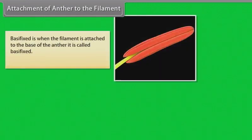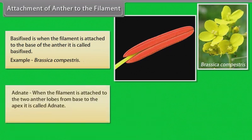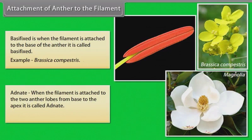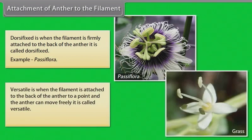Attachment of anther to filament: Basifixed — filament attached to the base of the anther, example Brassica campestris. Adnate — filament attached to the two anther lobes from base to apex, example Magnolia. Dorsifixed — filament firmly attached to the back of the anther, example Passiflora. Versatile — filament attached to the back of the anther at a point so the anther can move freely, example Grass.